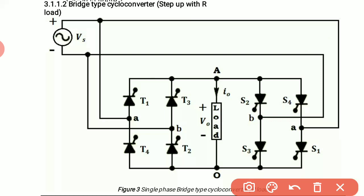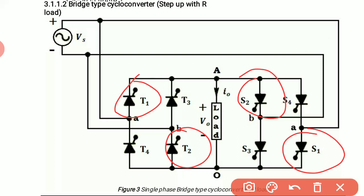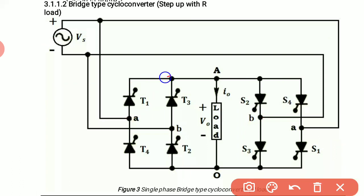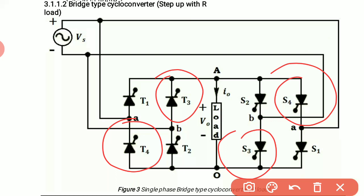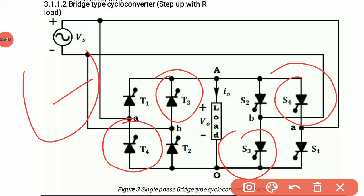In this cycloconverter, a resistive load is connected between two points, that is point A and O. In the bridge type cycloconverter, thyristors T1, T2 and S1, S2 conduct during the positive half cycle of AC input, while thyristors T3, T4 and S3, S4 conduct during the negative half cycle of AC input.